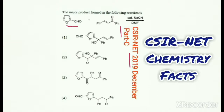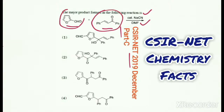Here furfural is treated with an alpha-beta unsaturated ketone in the presence of sodium cyanide and DMF as a solvent. The interesting part is the alpha-beta unsaturated ketone is an electrophile and furfuraldehyde is also an electrophile, because furfuraldehyde has a carbonyl carbon in the CHO that is an electrophilic carbon. Hence these two electrophiles will not react between themselves, but in the presence of the external nucleophile sodium cyanide they will react, and we have to determine the outcome by mechanistic analysis.